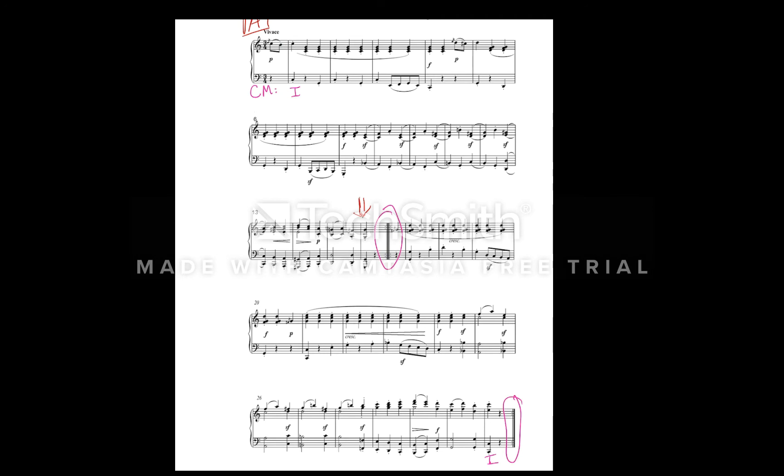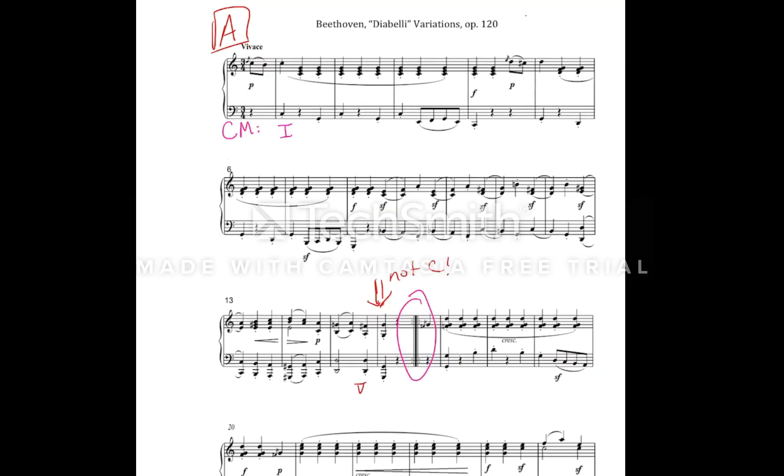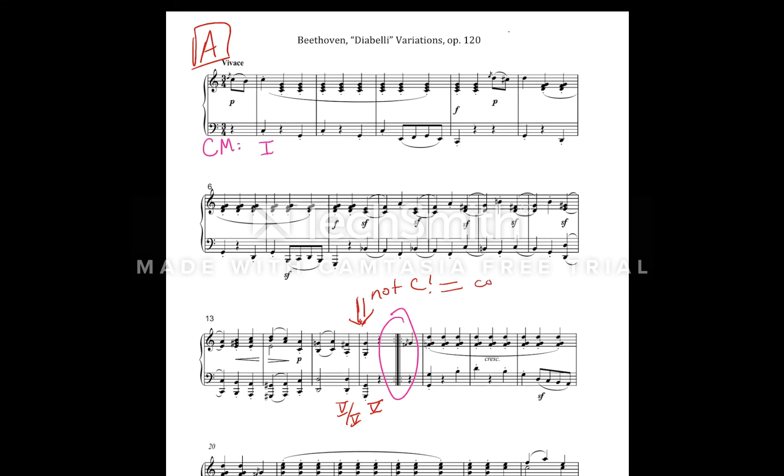At this point, for the first A section to be sectional, it would need to end with a tonic triad on the original tonic, which in this case is C. Since we hear a G, this is either a tonicized half cadence or a PAC in G. Neither of these options is C major, our original tonic, so this piece is continuous.